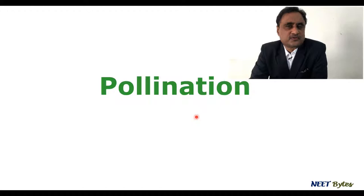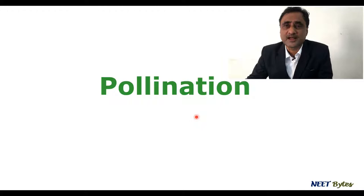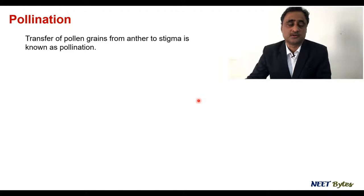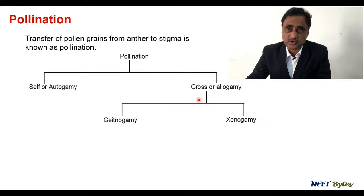Hello friend, this is Dr. Pankaj Kumar, your mentor for today's session. In this session we will be talking about pollination — the different types of pollination, what are the contrivances for self-pollination and cross-pollination, and of course what are the different agencies through which pollination is affected. First of all, the definition of pollination: whenever there is a transfer of pollen grains from anther to a stigma, we call it pollination. There are different types: self-pollination or autogamy, and cross-pollination or allogamy.